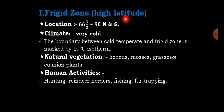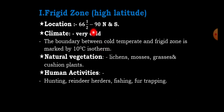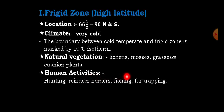Frigid Zone or High Latitude is the coldest climate zone of the globe. The climate of this region is very cold. The boundary between cold temperate and frigid zone is marked by the 10 degree Celsius isotherm, so the temperature of this region is less than zero degrees Celsius, or negative temperature. Natural vegetation of this region includes lichens, mosses, grassland, and cushion plants. Human activities of the frigid zone include hunting, reindeer herding, fishing, and fur trapping.